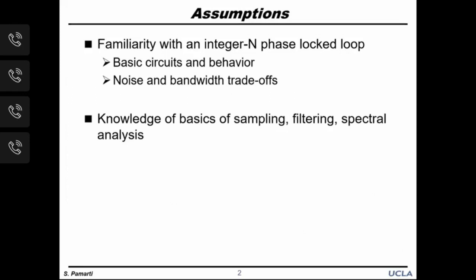This tutorial assumes a basic knowledge of the concepts of sampling, digital and analog filtering, Laplace and Z-transforms, autocorrelation and power spectral density of random sequences. It also assumes a working knowledge of an integer-N phase-locked loop: specifically how it works, what the basic circuit components are, and especially the trade-offs between loop bandwidth and circuit noise.